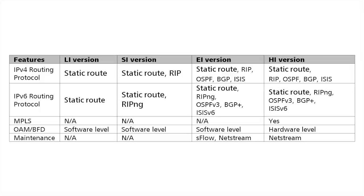Looking at IPv4 routing protocol support, you can see that as we move from the LI to SI to EI and HI we add more capabilities. We begin with static routing, then add RIP, and as we move to the EI and HI versions we also add OSPF, BGP, and ISIS.